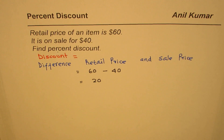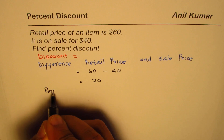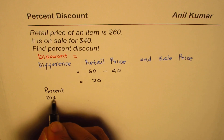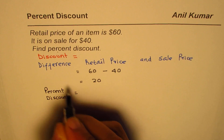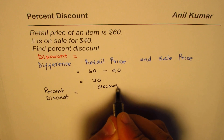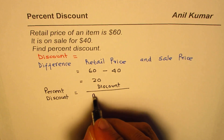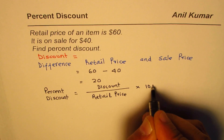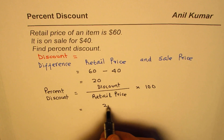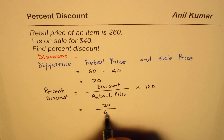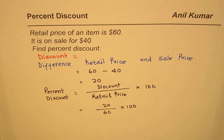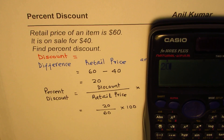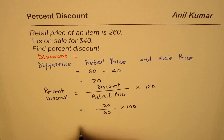Twenty dollars is the discount. What we need to find is percent discount. Percent discount equals discount divided by the original retail price, times one hundred. In our case, discount is twenty dollars and original price is sixty dollars. So twenty divided by sixty times one hundred equals thirty-three point three three percent.